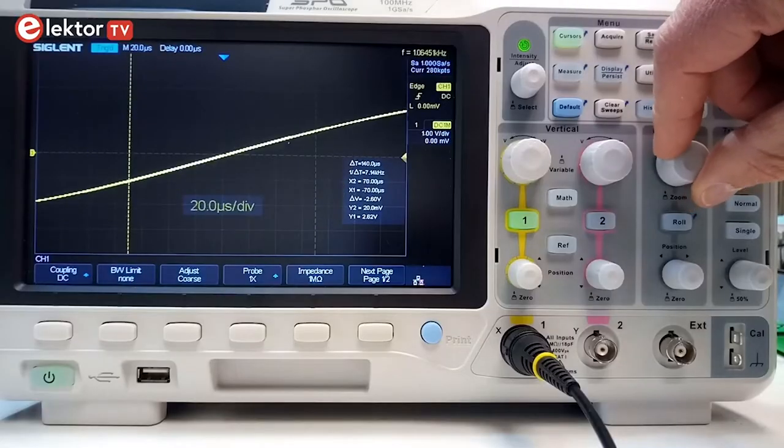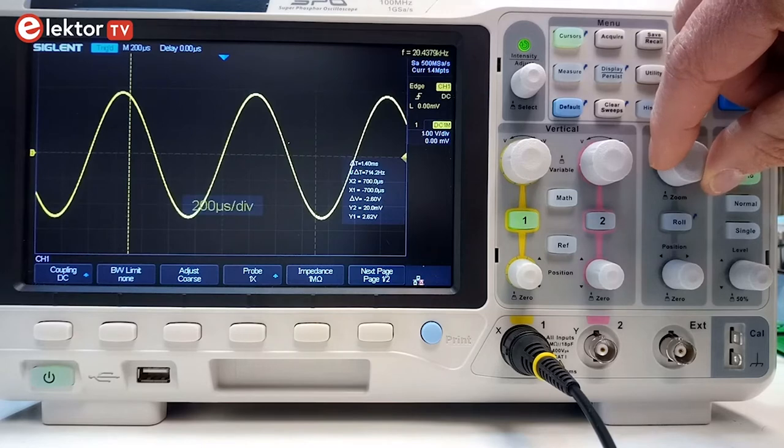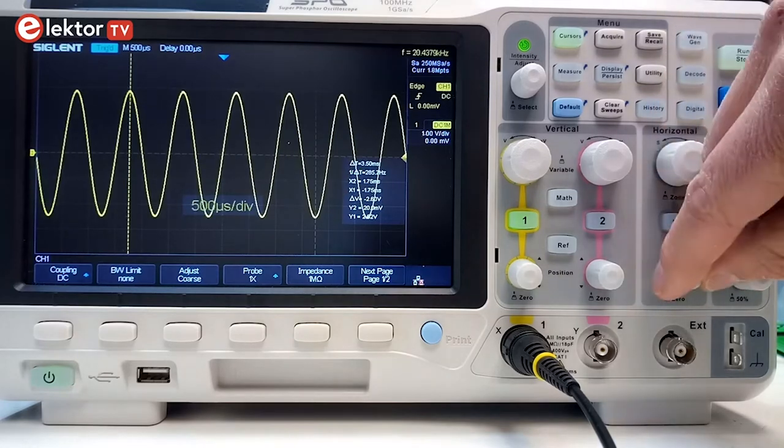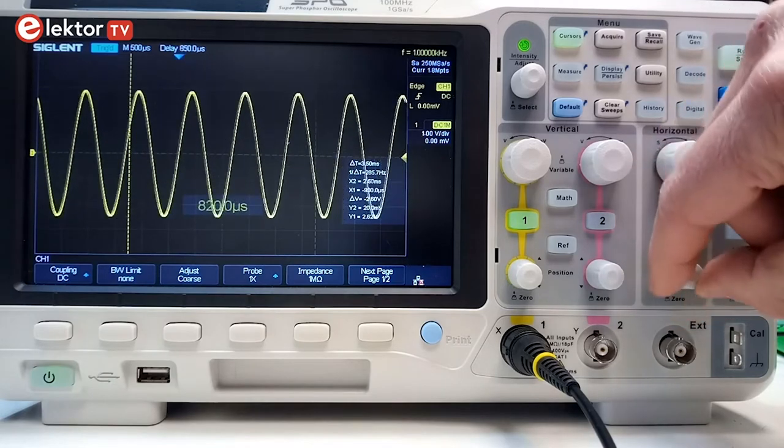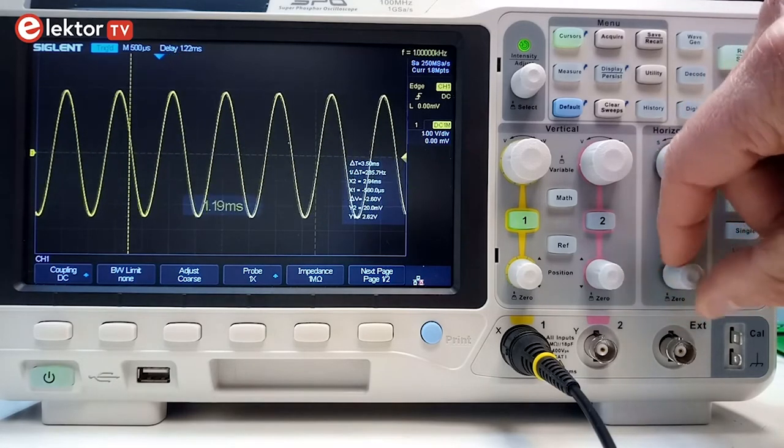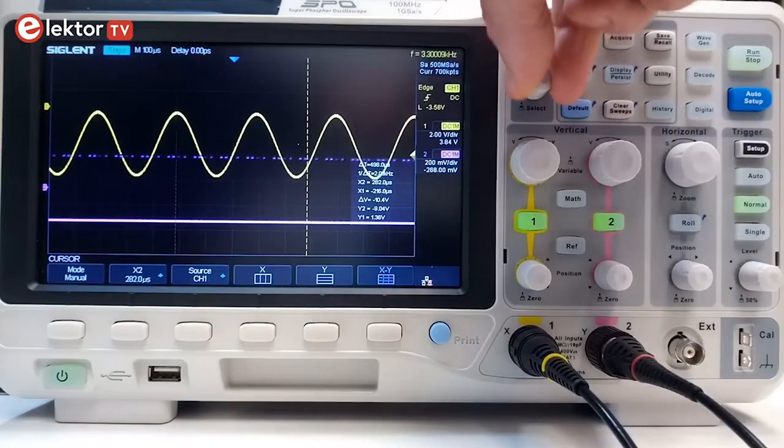As I said at the beginning, an oscilloscope displays the evolution of a voltage over time, a signal, and it does this in the shape of a two-dimensional graph with the center in the middle of the screen. Note that I said voltage and not current. An oscilloscope is a fancy voltmeter.